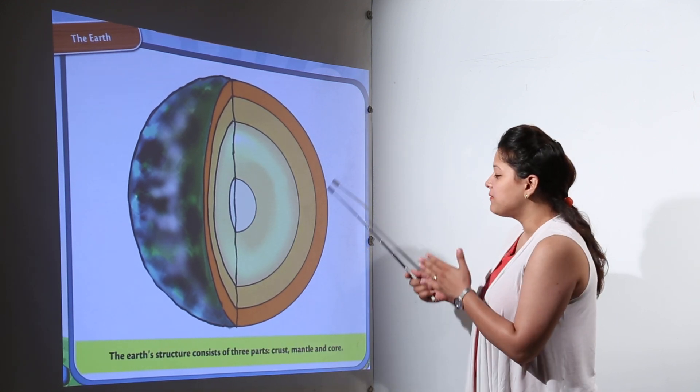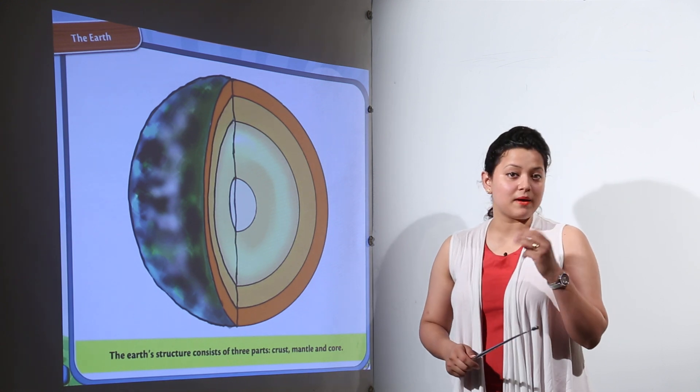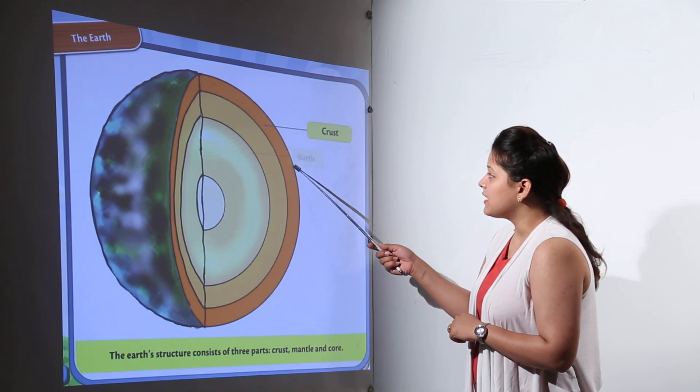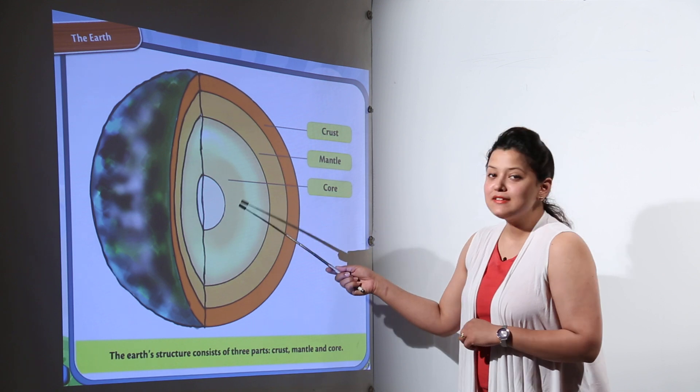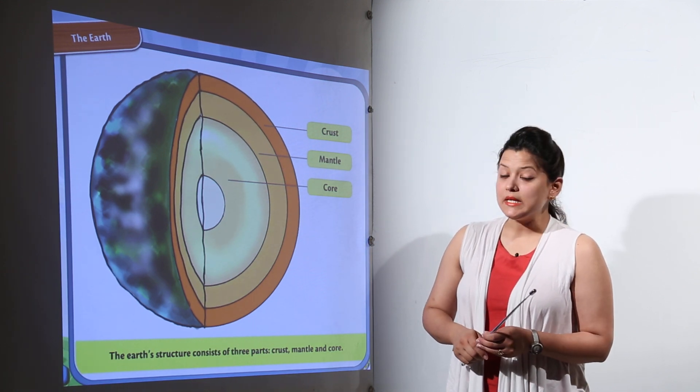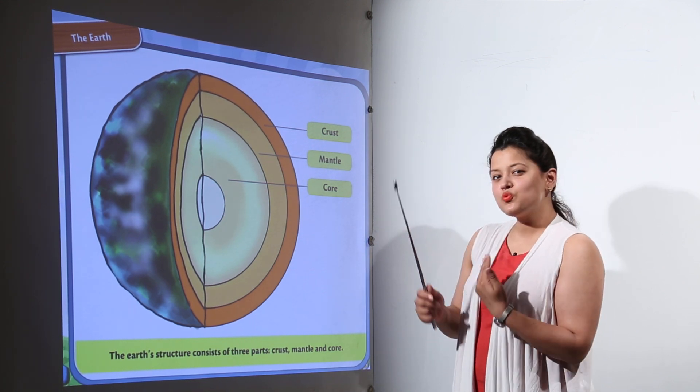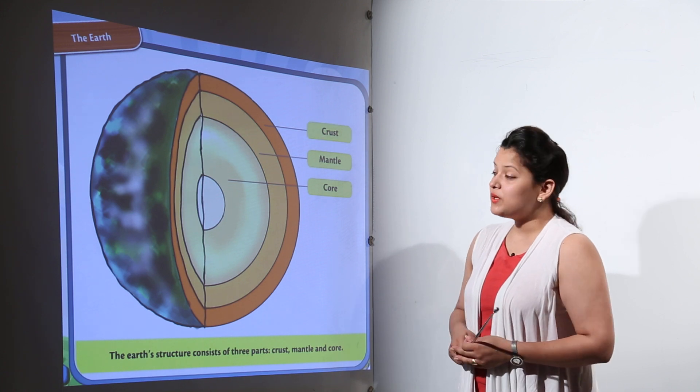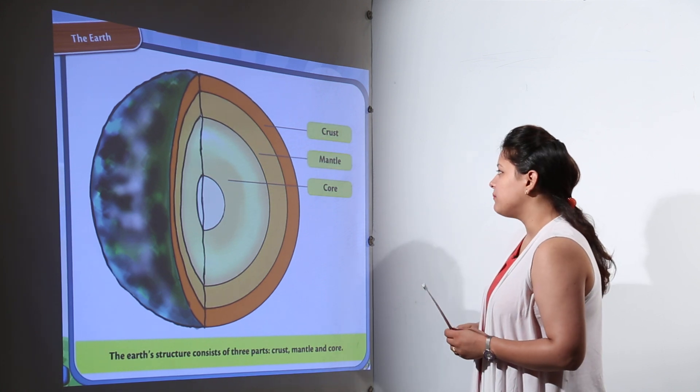And these layers are basically divided into three parts: the crust, the mantle, and the core. So you can see the layers are just one after the other. So we will study one layer one by one.